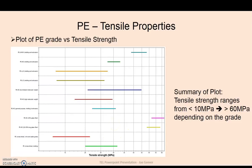So here's another graph that I did up and placed into this presentation, where we're looking at a plot of polyethylene grade versus tensile strength. And again, we can see from this graph that the tensile strength will vary between less than 10 MPa and greater than 60 MPa. So the grade very much determines what its end use application is going to be.